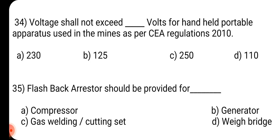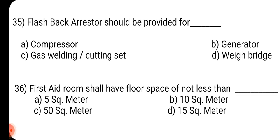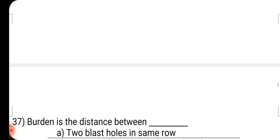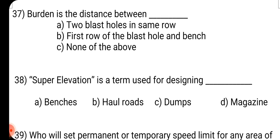Question number 34: Voltage shall not exceed dash volts for handheld portable apparatus used in mines as per CEA Regulation 2010. Answer is B: 125 volts. Question number 35: Flashback arrestor should be provided for dash. Answer is C: Gas welding or cutting set. Question number 36: First aid room shall have floor space of not less than dash. Answer is B: 10 square meter. Question number 37: Burden is the distance between dash. Answer is B: First row of the blast hole and bench.